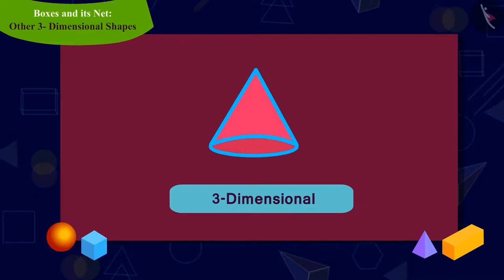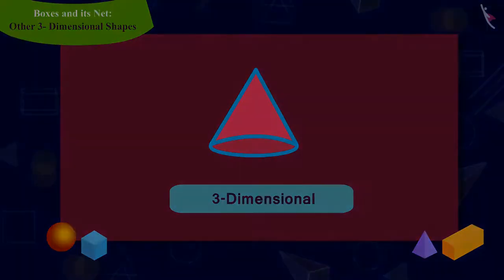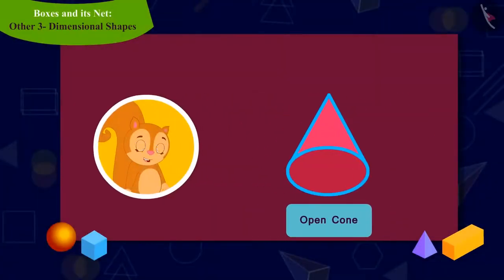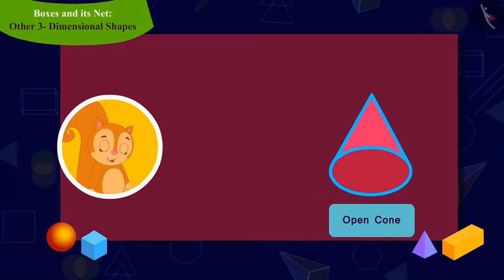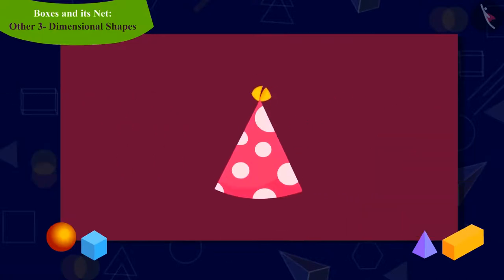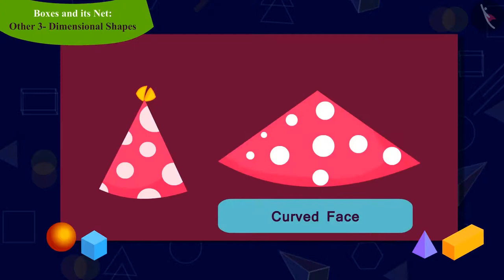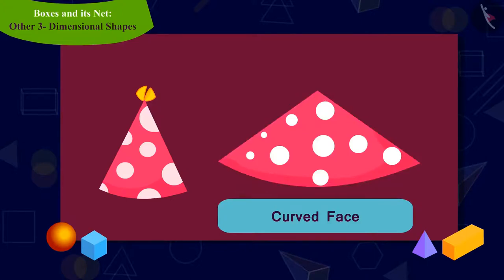It is a three-dimensional shape which has only one curved surface. Chanda, in order to know the shape of the net of the open cone, took a hat and opened it. Kids, the shape of the net of an open cone looks like this figure.